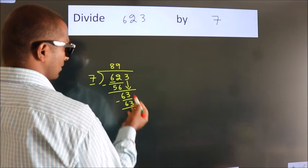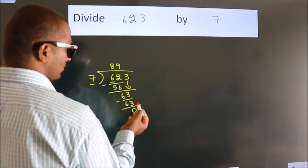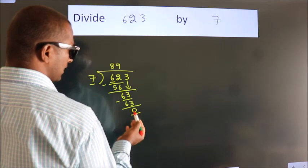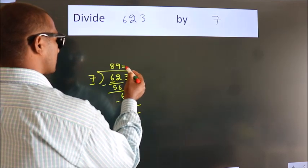After this, no more numbers to bring down. And we got remainder 0. So this is our quotient.